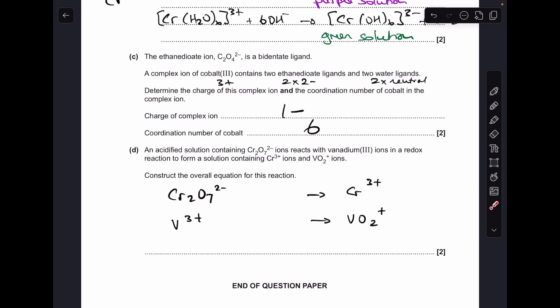And the final part of the question, construction of the overall equation for this redox reaction. The easiest way I think to do this is to do the two separate parts and then combine to create the overall reaction. So we're told that Cr2O7 2- is converted into Cr 3+, and the V 3+ ions are converted into VO2 1+ ions. So let's build up the two half equations. The first thing we need is a two in front of the chromium.